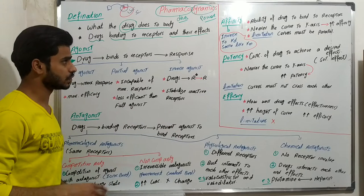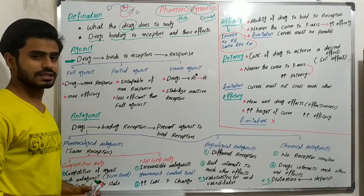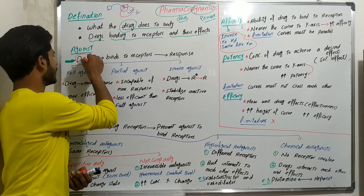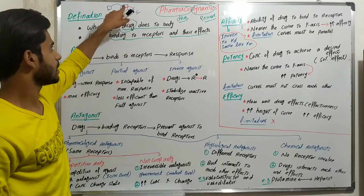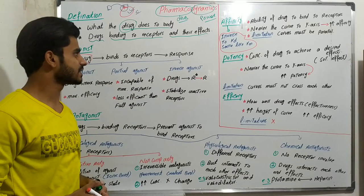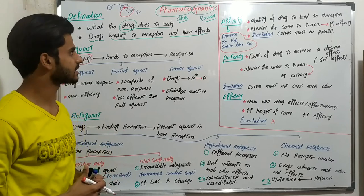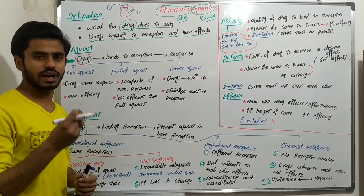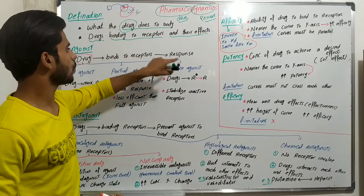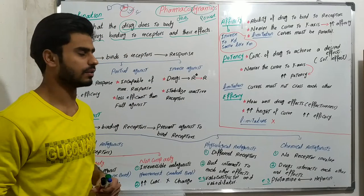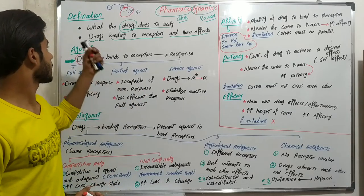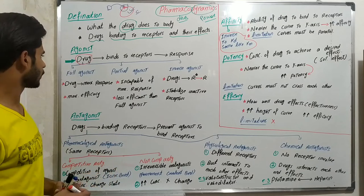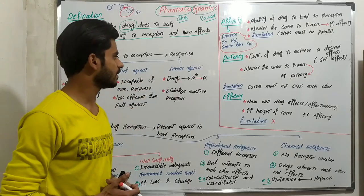Now we will discuss terms used in pharmacodynamics. The first is the agonist. An agonist is a drug that goes and binds to the receptors and in result shows its response — its effects. The agonist drug has further types: full agonist, partial agonist, and inverse agonist.